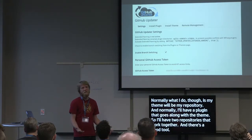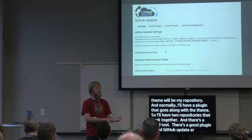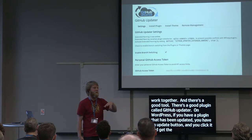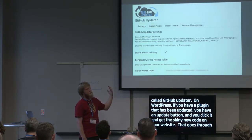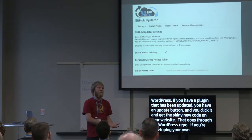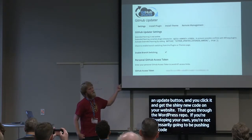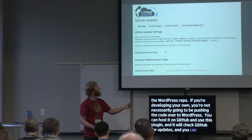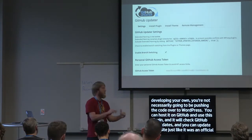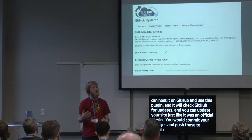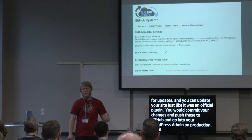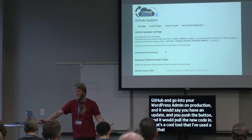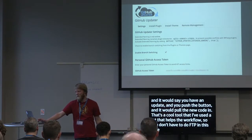There's a good plugin called GitHub Updater. Normally when a plugin has been updated in WordPress, you get the update button and can update through the WordPress plugin repo. But if you're developing your own plugin for a specific client, you're not necessarily pushing it to WordPress.org. You can host it on GitHub and use this plugin to check GitHub for updates — you can update your site just like an official plugin. You push your changes to GitHub, go into your WordPress admin on your production site, it says there's an update, you click it, and it pulls all your new code in. No FTP needed.